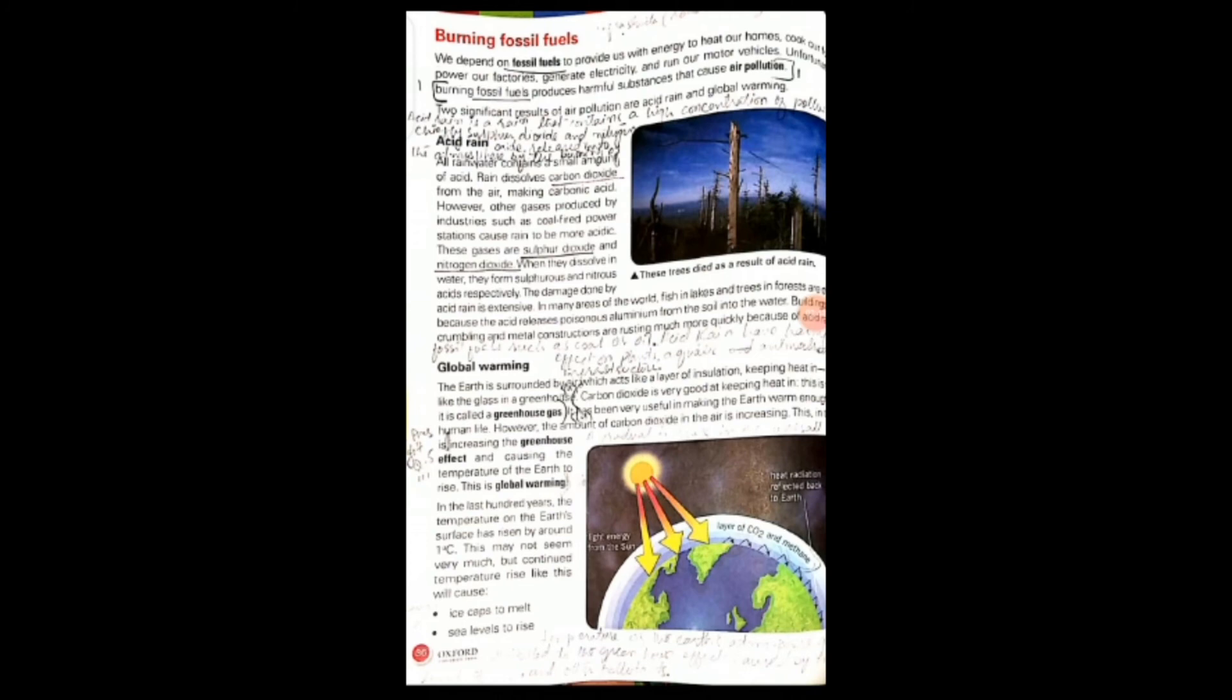The earth's surface has risen by around 1 degree centigrade in the last 100 years. If it continues to rise, then what will be the drawback? Ice caps will melt. All the ice glaciers melt. When ice glaciers melt, the sea level will automatically be higher.